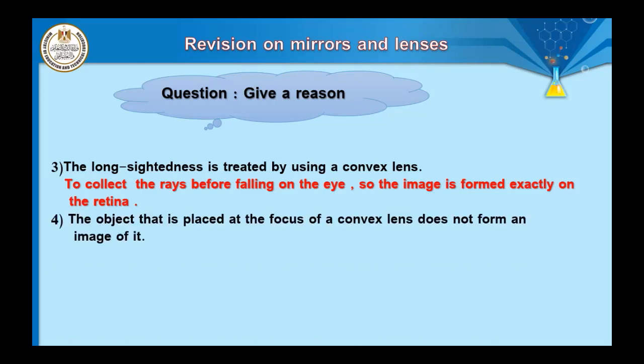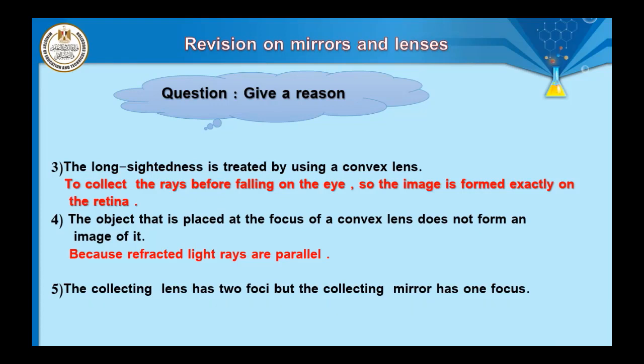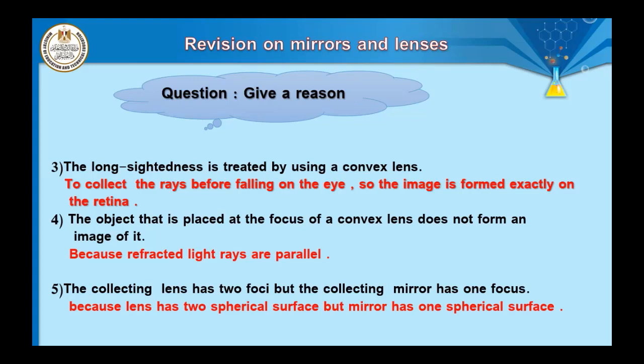Question number four: an object placed at the focus of a convex lens doesn't form an image. Because the refracted light rays are parallel to each other and never converge. Question number five: a collecting lens has two focal points, but a collecting mirror has one focus. Because the lens has two spherical surfaces, while the mirror has only one spherical surface.